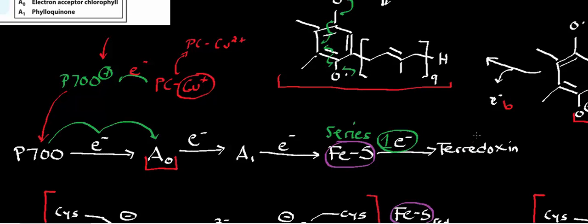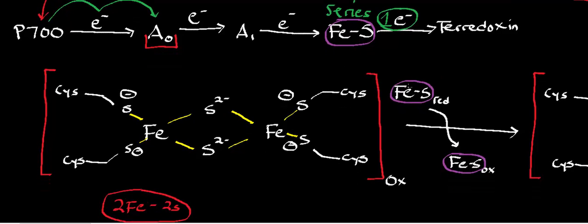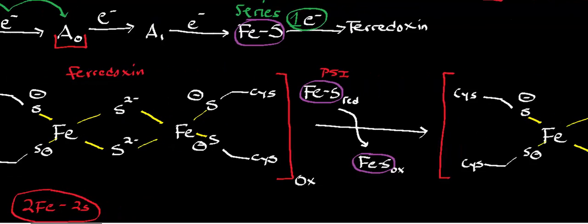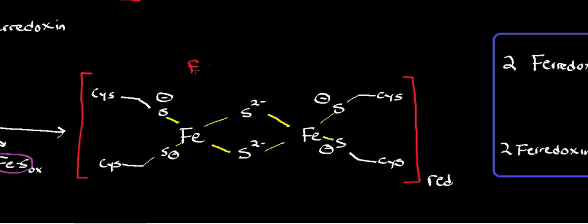Now we have ferredoxin in the reduced state. The iron-sulfur center that is part of ferredoxin is a coenzyme used by ferredoxin. The iron-sulfur centers that are part of photosystem I transfer electrons one at a time to ferredoxin, generating the iron-sulfur center of ferredoxin in the reduced state — which we denote as ferredoxin in the reduced state.